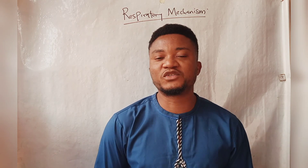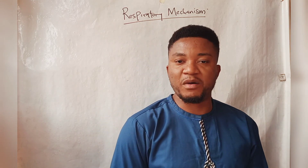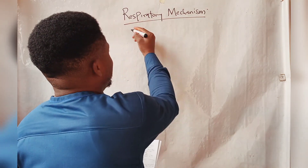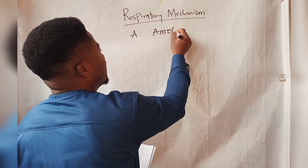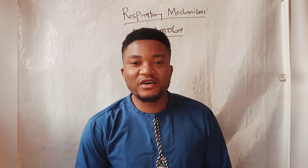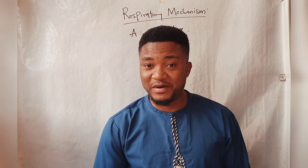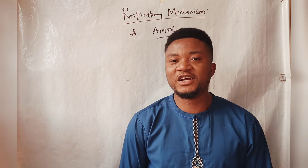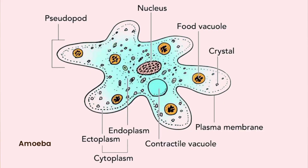The first organism we are going to look at today is the amoeba. The amoeba is a unicellular organism. For the amoeba, respiration happens across the entire body surface — there is no specific organ for respiration. Respiration in amoeba occurs across the entire body surface.